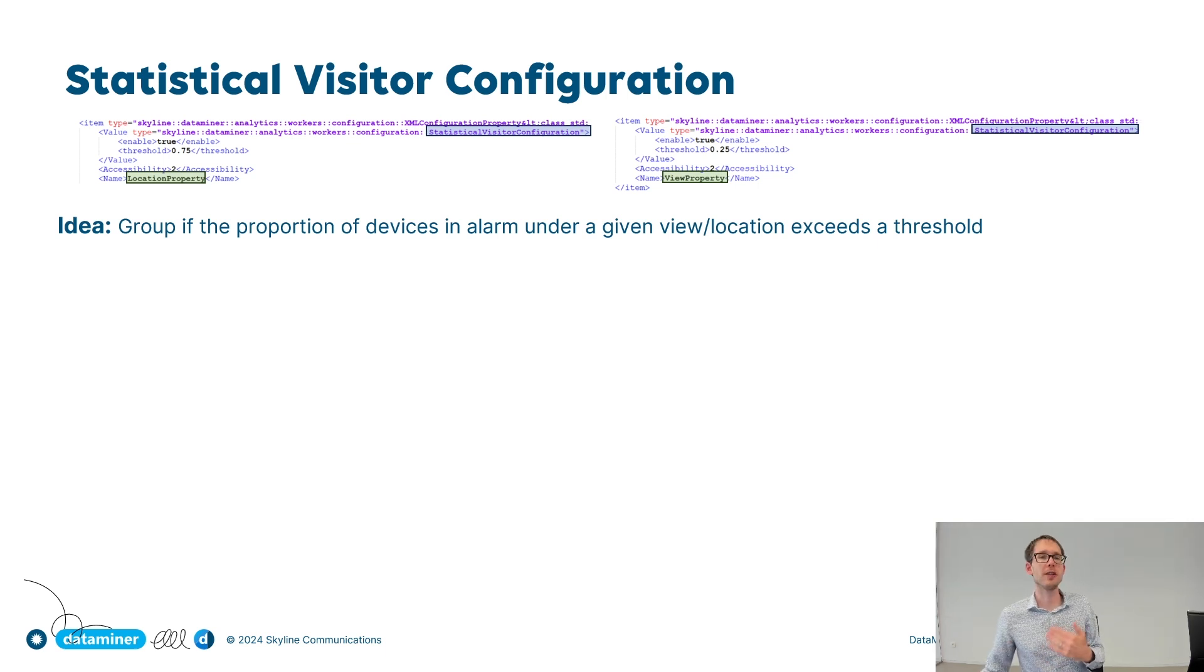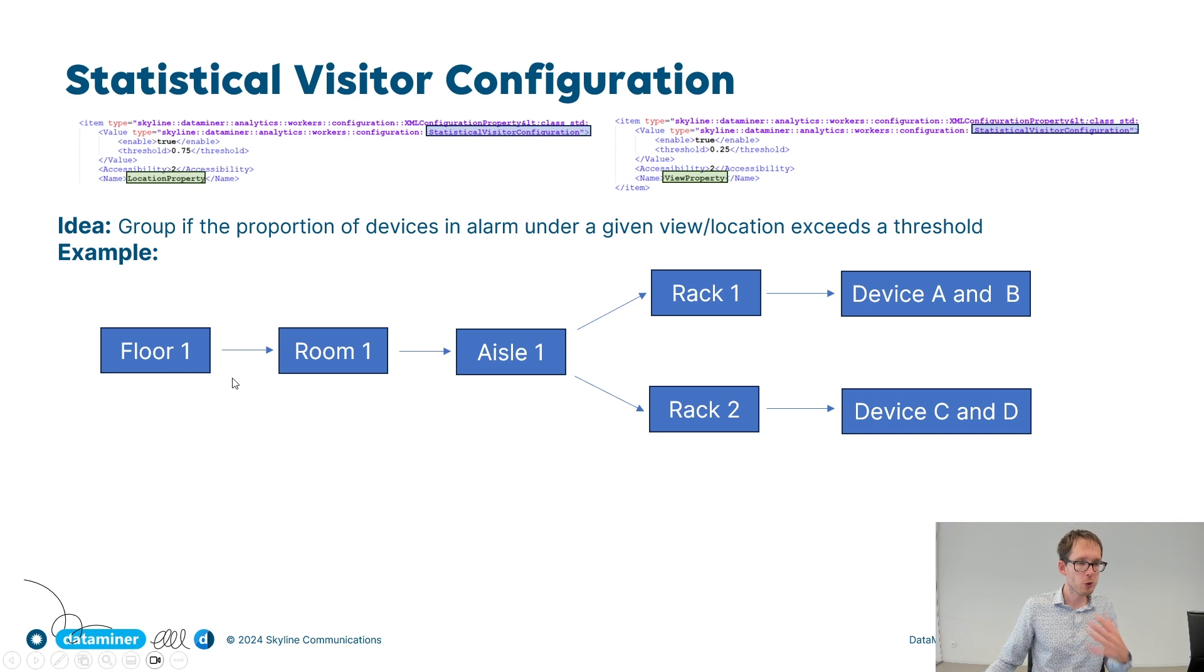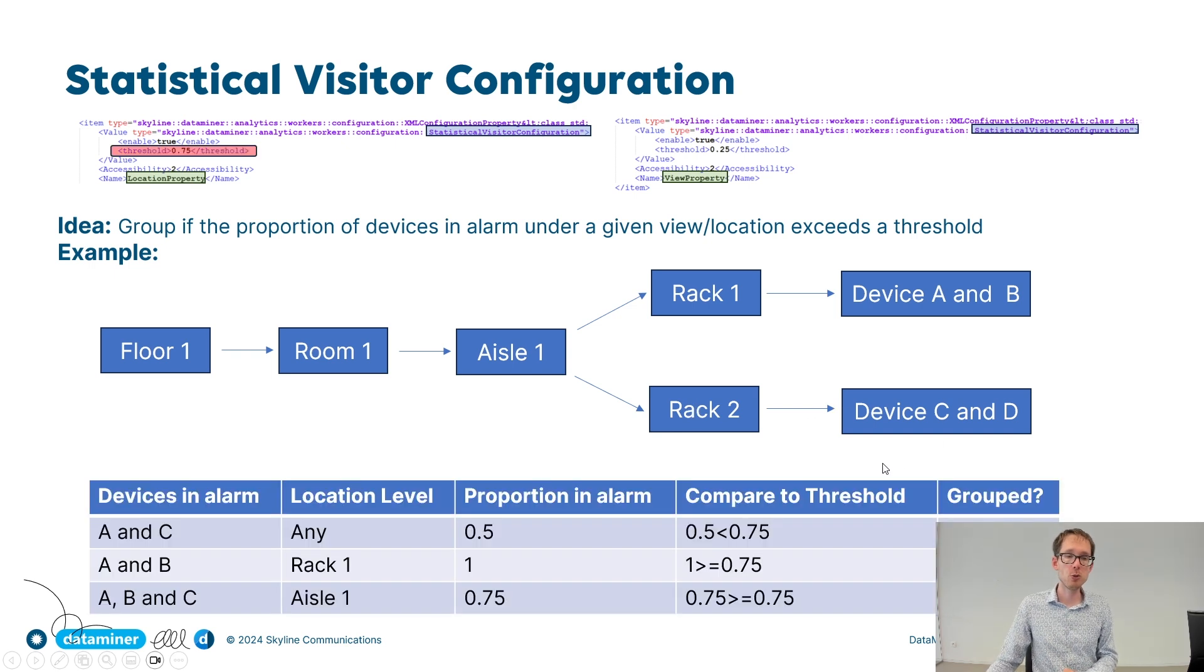Let me clarify this with some examples. Assume that we are in the following setup. We have a building with a floor and there's a room in there and there's an aisle in there. And that aisle contains two racks, rack one and rack two. Now assume that rack one has two devices, device A and device B. And assume that rack two also has two devices, C and D.